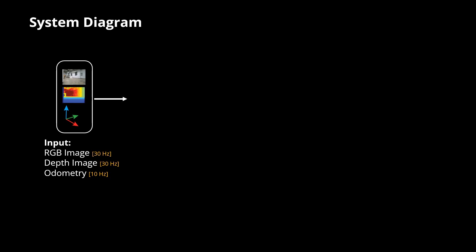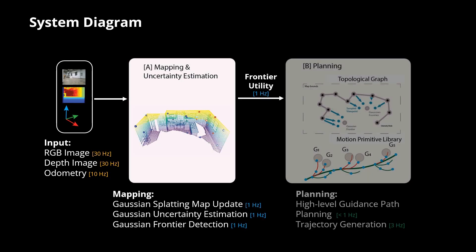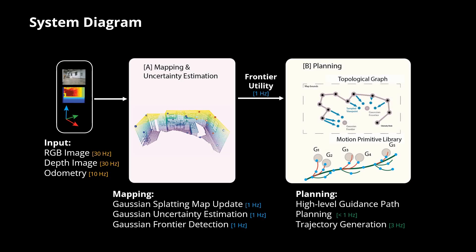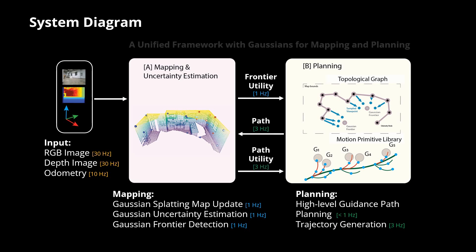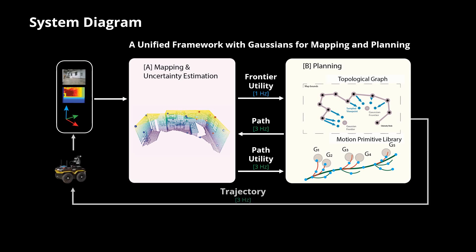Our system takes as input RGB and depth images along with LiDAR odometry and builds a Gaussian map in real-time. The mapping module computes Gaussian uncertainties and frontiers which are passed to the planning module. The planning module constructs a topological graph for high-level guidance on which a motion primitive library planner generates collision-free high-utility paths for exploration.